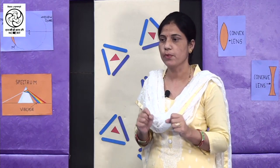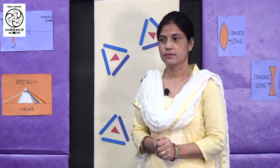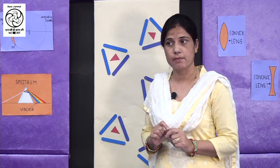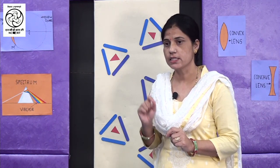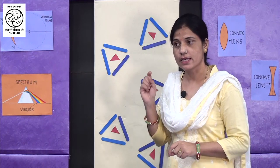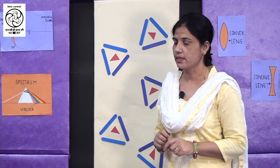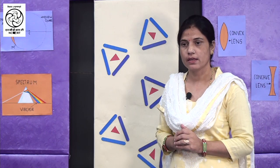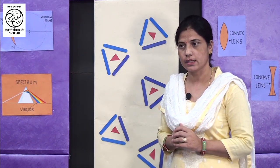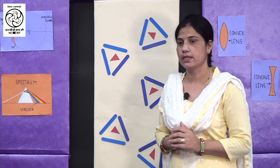Now tell me, what is the far point? Infinity? Yes ma'am, I think it is infinity. Exactly. Can you give an example of an object situated at infinity? Yes ma'am, we can see the sun, which is at infinity. Exactly. The sun is situated at a distance of infinity from us. Ma'am, what happens when the image is not formed on the retina? Good question, Budapriya. If the image is not formed on the retina, it will lead to defects of vision.